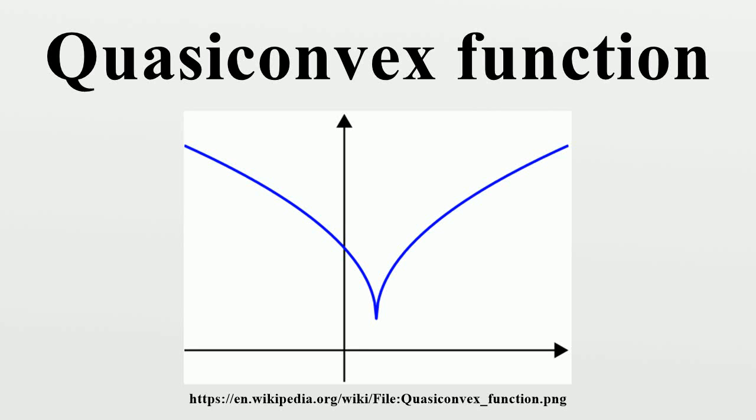In mathematics, a quasi-convex function is a real valued function defined on an interval or on a convex subset of a real vector space such that the inverse image of any set of the form is a convex set.